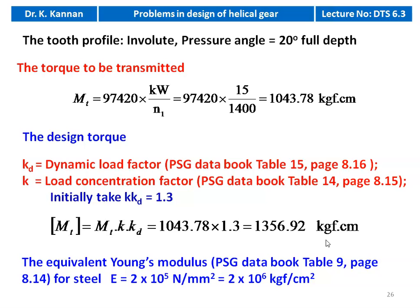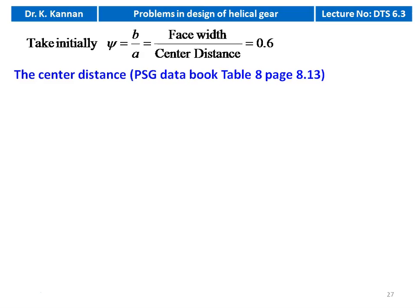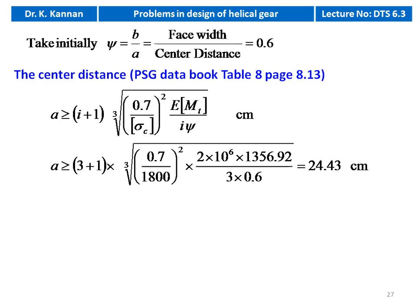Young's modulus E = 2 × 10⁵ N/mm² = 2 × 10⁶ kgf/cm². We take ψ (B/A) = 0.6 initially. Using the centre distance equation from page 8.13: A ≥ (i+1) × ∛[0.7 / (σC² × E × MT) / (i × ψ)]. Substituting: A ≥ (3+1) × ∛[0.7 / (1800² × 2×10⁶ × 1356.92) / (3 × 0.6)], giving A ≥ 24.43 cm.